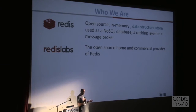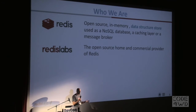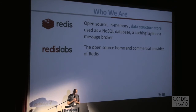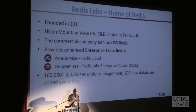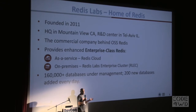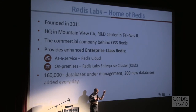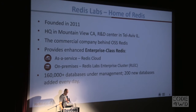Redis is an open source in-memory data structure store. You can use it as a NoSQL database, for caching, for pub/sub, as a message broker, and many other use cases. I represent Redis Labs — the company behind open source Redis and the commercial provider of Redis. We were founded in 2011, headquartered in Mountain View, with R&D in Tel Aviv and northern Israel. We provide solutions on the cloud — AWS, Azure, Google Cloud — and on-premise deployments.